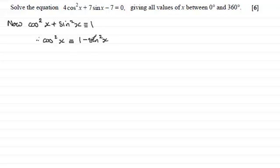And what we can do is substitute this into our equation here. If we do that, we therefore have that the equation becomes 4 multiplied by 1 minus sine squared x in place of cos squared x, and then plus 7 sine x minus 7, and that equals 0.